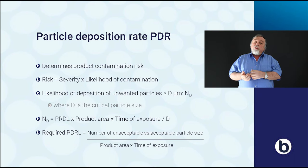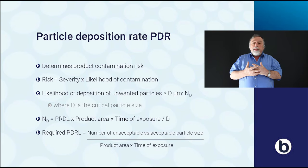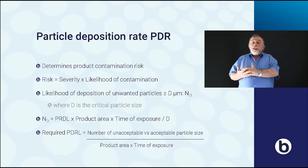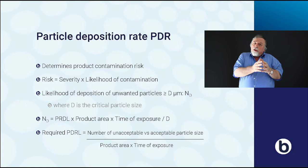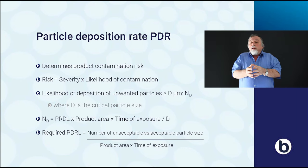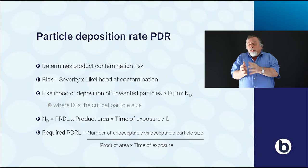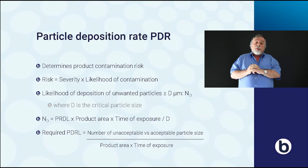You can also turn it the other way around and set requirements for the particle deposition rate level. In that case, the particle deposition rate level is derived from the number of acceptable particles for a certain particle size. So you can say: I accept a very low number of large particles, or I accept a slightly higher number for smaller particles. You divide this number by your product area and the time of exposure to get your particle deposition rate limit.